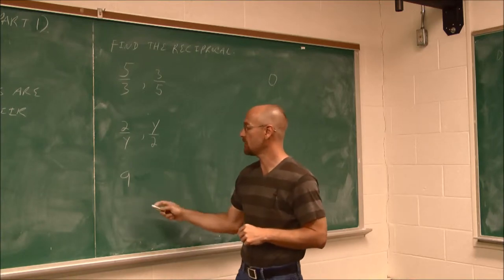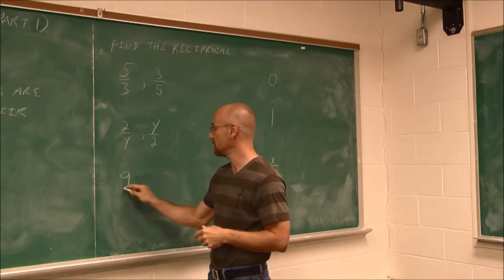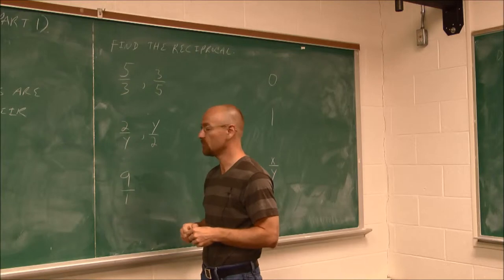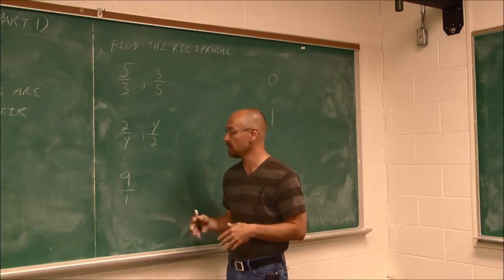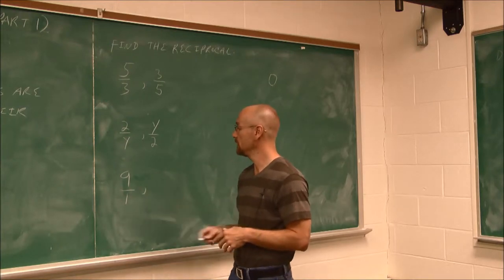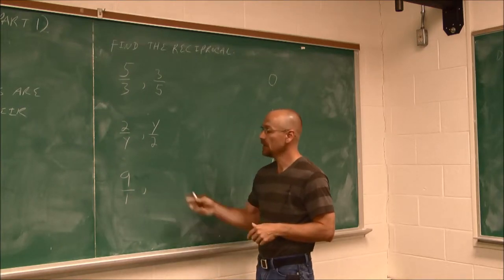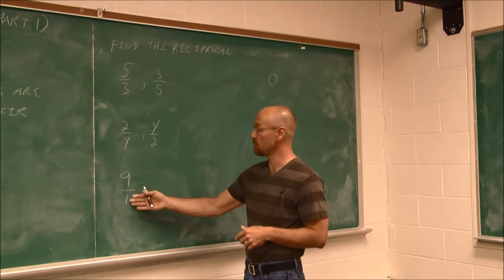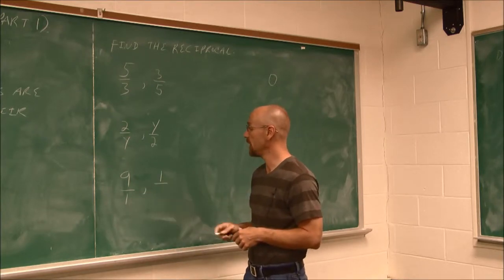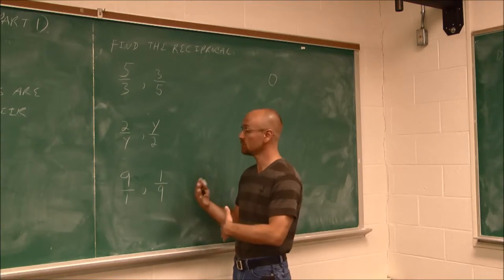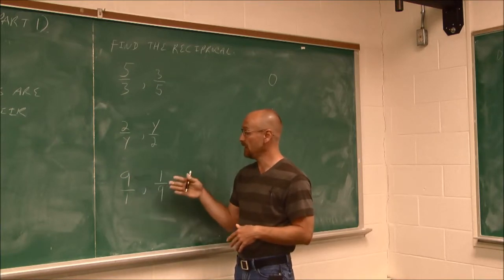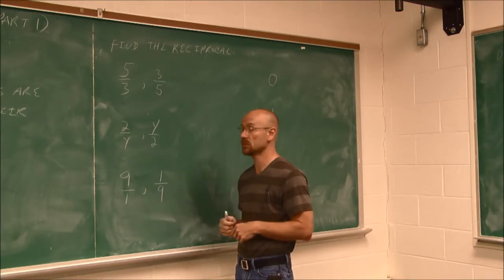What if I just have a constant? Well, any constant I can think of as being divided by 1, because 1 never changes the number, whether I'm multiplying or dividing. So 9 over 1 is the same as 9. Its reciprocal is, I put the denominator in my numerator and the numerator in the denominator. I essentially just flip it. So 9 and 1/9 are reciprocals.